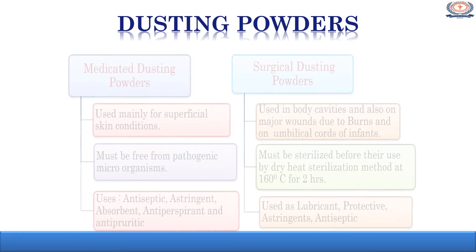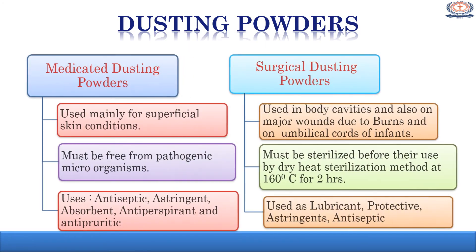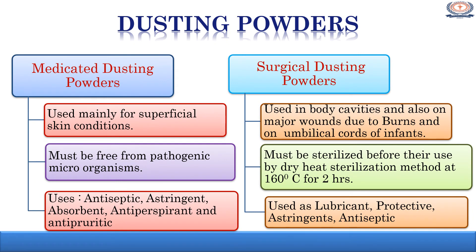Let us discuss the two types: medicated and surgical dusting powder. Medicated dusting powders are mainly used for superficial skin conditions, whereas surgical dusting powders are used in body cavities and also on major wounds as a result of burns and umbilical cords of infants. Surgical dusting powder must be sterilized before their use, whereas medicated dusting powders must be free from pathogenic microorganisms. Medicated dusting powders are mainly used for antiseptic, astringent, absorbent, antiperspirant, and antipruritic effects.